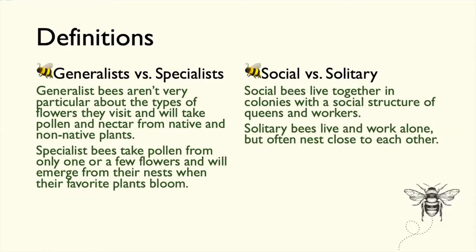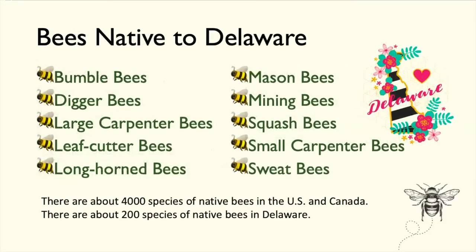Social bees have an advantage — if something happens to one female, others can take over. With solitary bees, if something happens to that one individual, that's the end. Social bees can also have multiple generations within a single year.